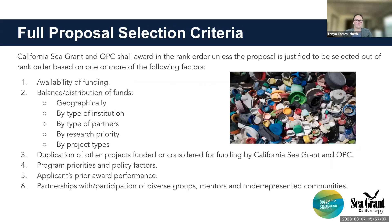The selection of proposals for funding shall occur in rank order unless a proposal is justified to be selected out of rank order based on factors including the availability of funding, the balance or distribution of funds geographically, type of institution, type of partners, research priority or project types, duplication of other projects funded by California Sea Grant and the Ocean Protection Council, program priorities and policy factors, applicants' prior award performance, and partnerships with participation of diverse groups, mentors, and underrepresented communities.